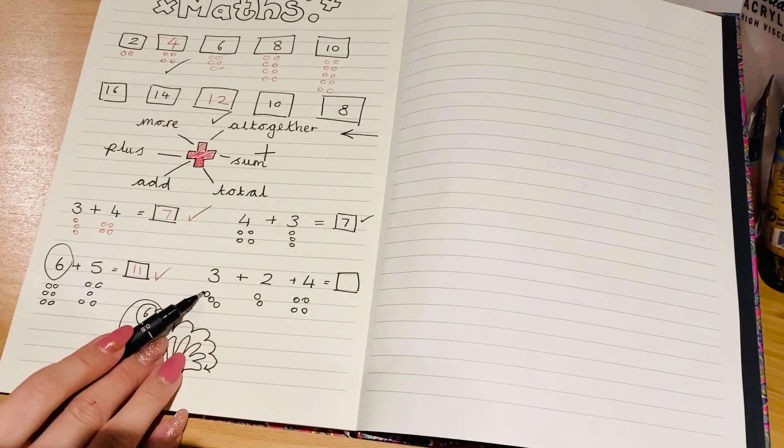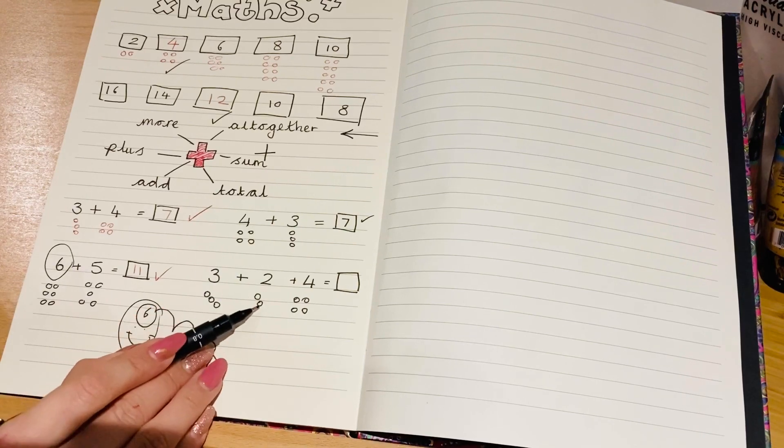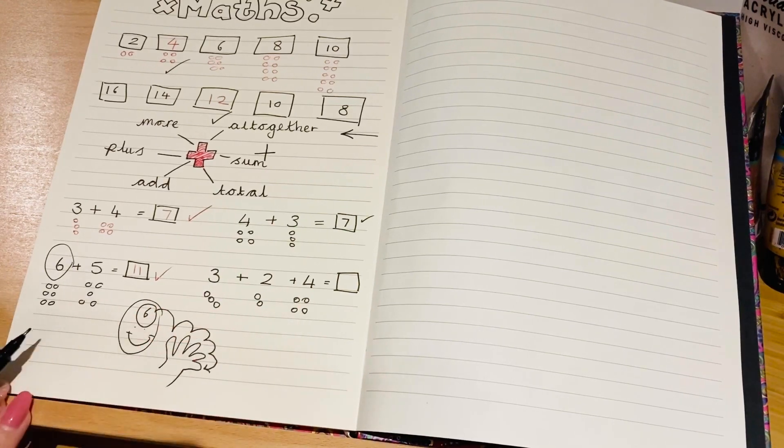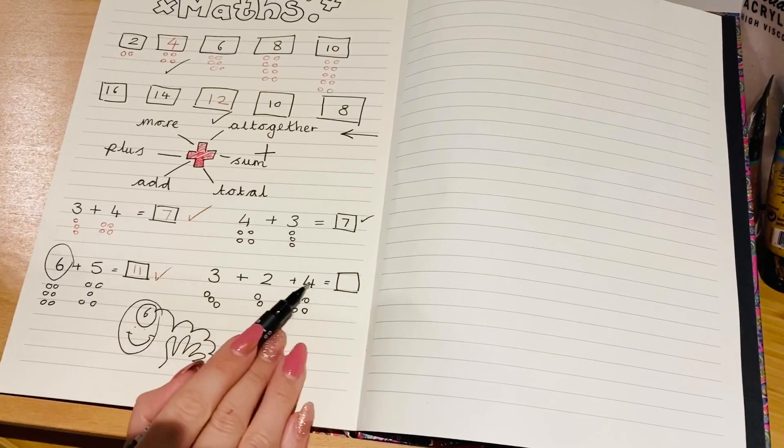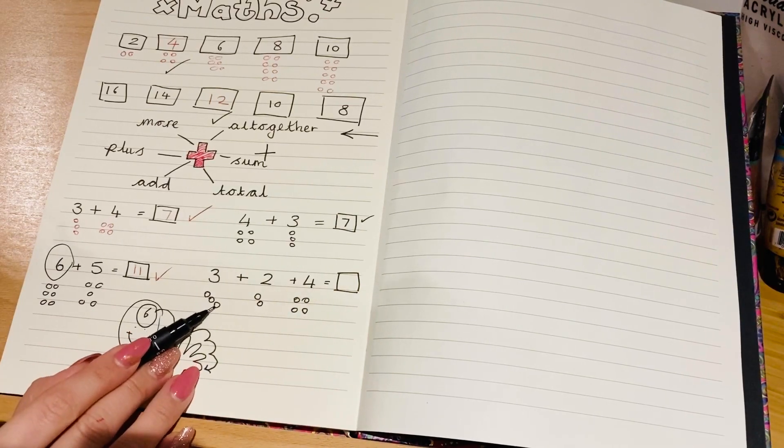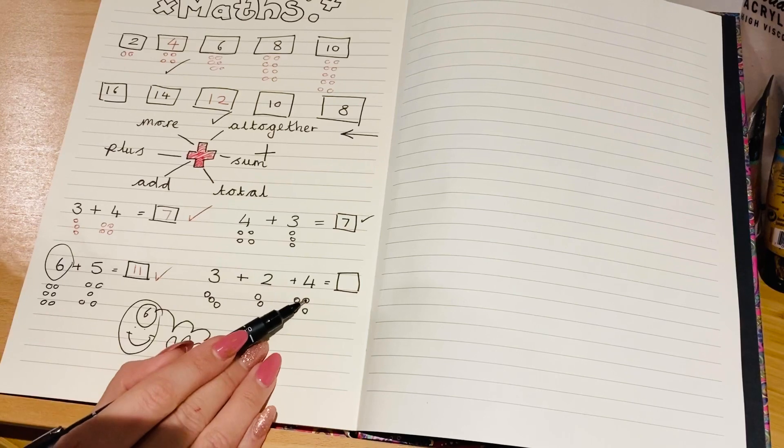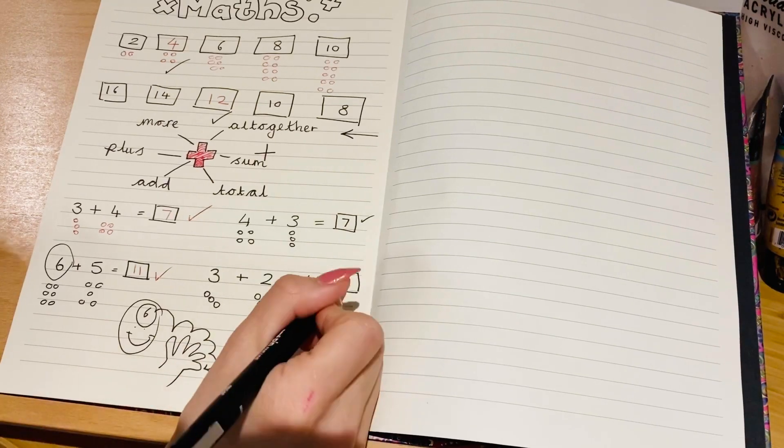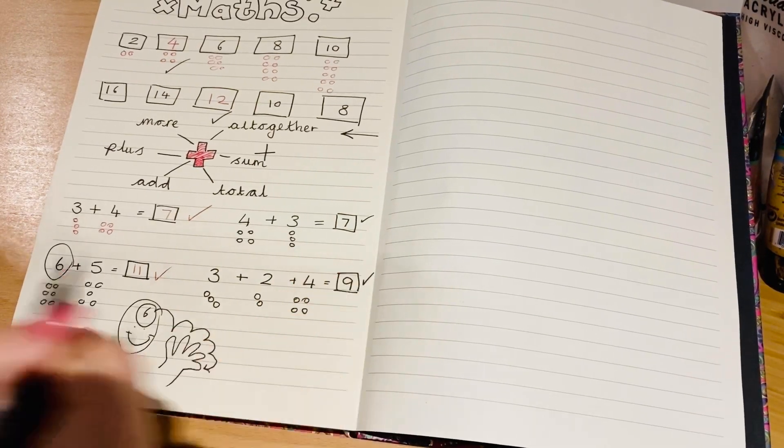Okay, so I've got three there. One, two, three, add two, one, two, add four, one, two, three, four. So I'm going to add them all together to find the total because that's what this sign is telling me to do. One, two, three, four, five, six, seven, eight, nine. The answer is nine. Give yourself a tick if you managed that one.